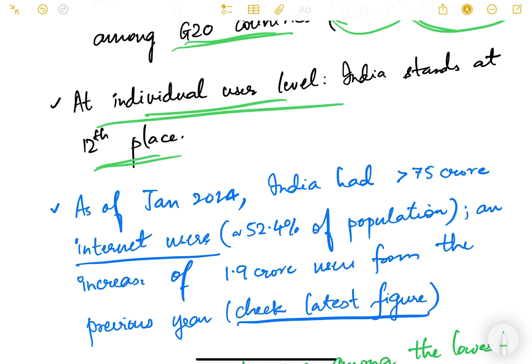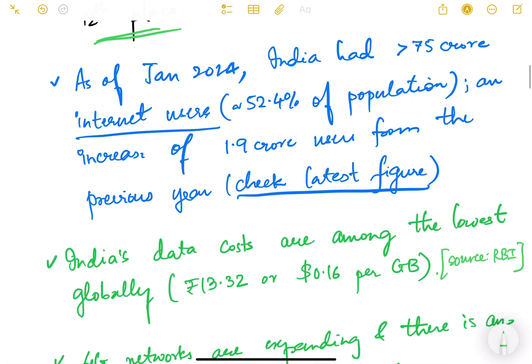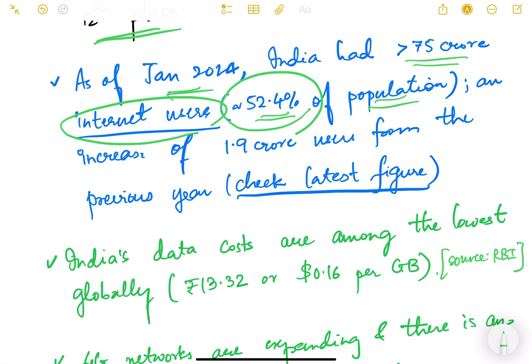At the individual user level, India stands at 12th place in the world in using digital technology. As of January 2024, India has had more than 75 crore (750 million) internet users — more than the population of many countries — representing 52.4 percent of the current population. This is an increase of more than 1.9 crore from the previous year, meaning almost 2 crore people were added as internet users in just one year.